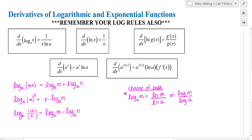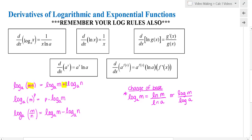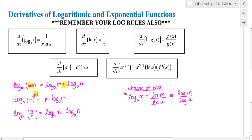Let's take a look at a few of the rules needed before we do derivatives. If we have log base a of a product, that becomes the sum of the two logs — because logarithms are exponents, their properties are very similar to exponent rules. If I have log base a of m to some exponent, that becomes multiplication in front of the log. And if I have a quotient, that becomes the difference of the logs.